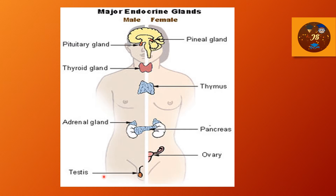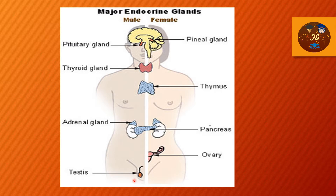Here is an illustration of the major endocrine glands — the left portion shows the male and the right portion shows the female, as labeled. Some glands are common to both: the pituitary gland, thyroid gland, thymus, adrenal glands on the kidney, and the pancreas. In the female there are ovarian hormones, and in the male there are hormones from the testes.